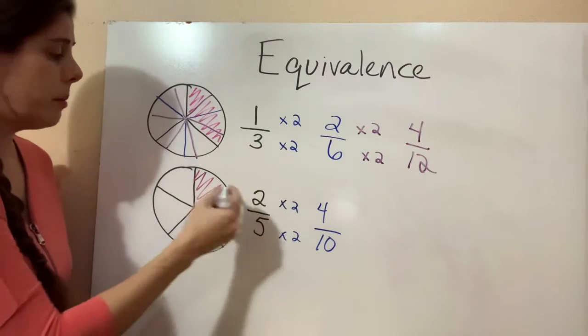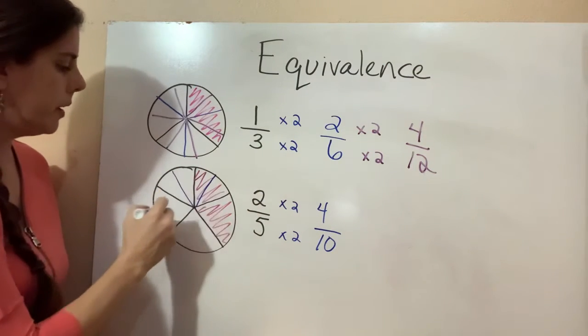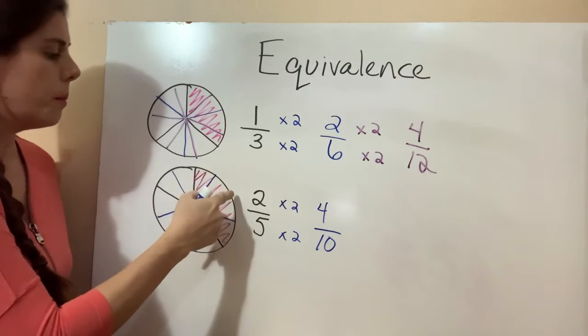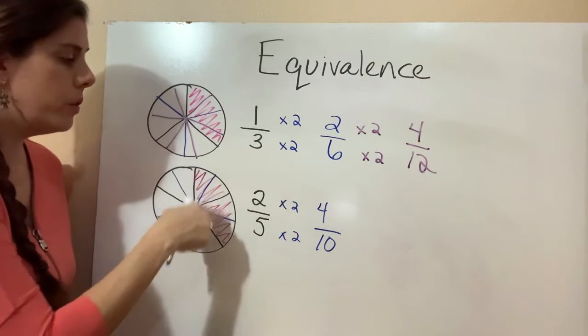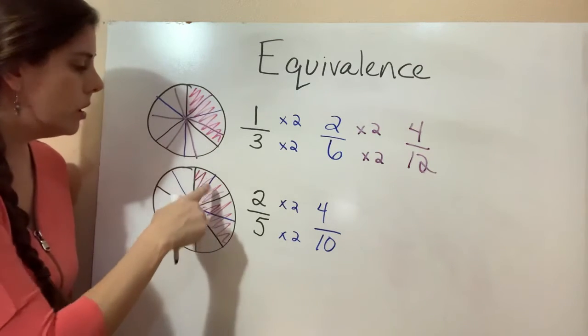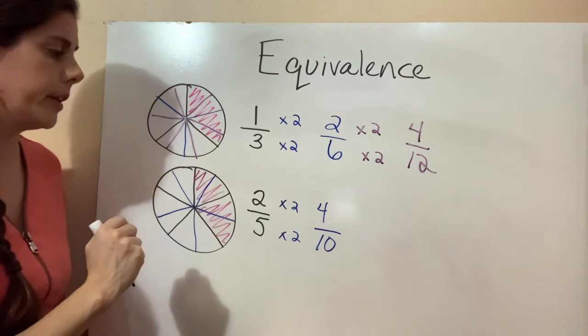And if we're multiplying by two, that just means we're doubling how many slices we have. So before I had five total with two colored in. When I doubled all of them, I have ten total. But now one, two, three, four are colored in.